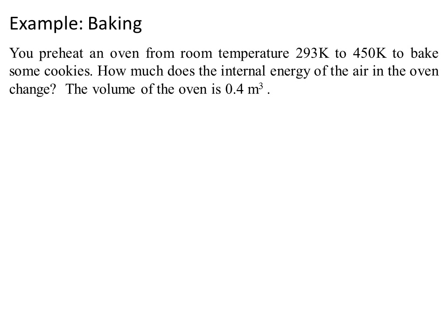Let's look at an example of baking. You preheat an oven from room temperature from 293 K to 450 K to bake some cookies. How much does the internal energy of the air in the oven change? The volume of the oven is 0.4 meters cubed.